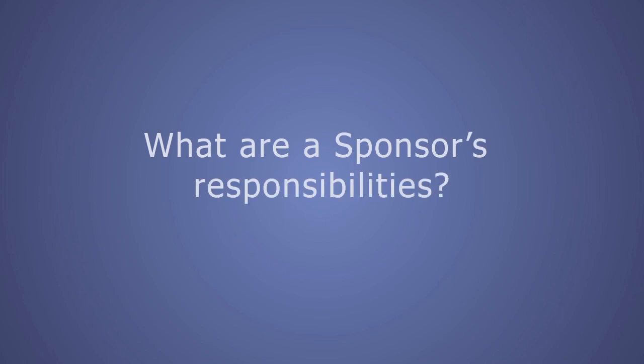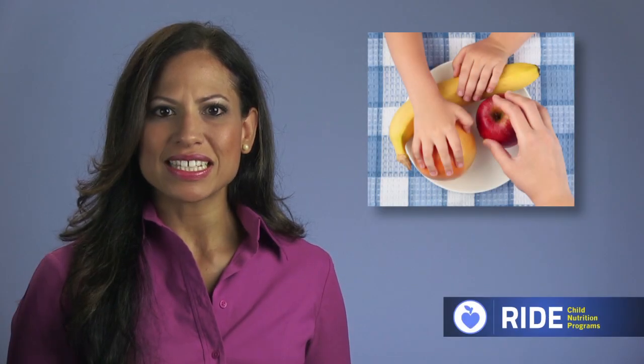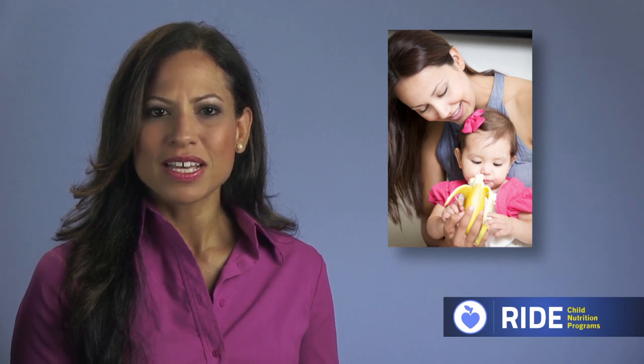Let's talk about your responsibilities as a sponsor. As either a sponsor new to the CACFP or a current sponsor, there are specific civil rights requirements that you are responsible to undertake for the food program. These include data collection. Ethnic and racial data is used to determine how effectively your program is reaching potentially eligible applicants and where additional outreach may be needed. RIDE requires that you gather this data and report it. The meal benefit application has a section for families to identify their ethnic and racial data.